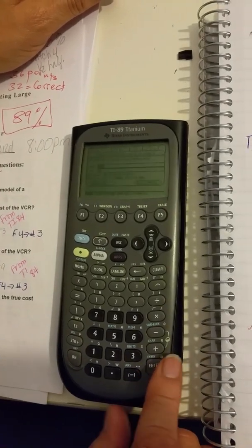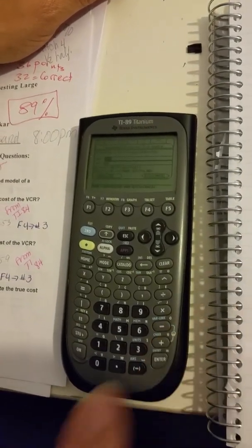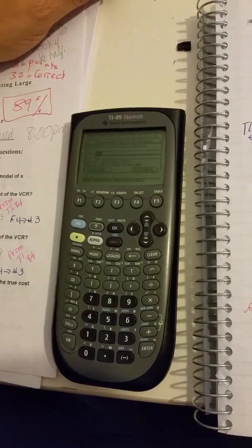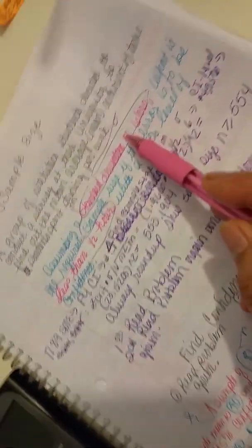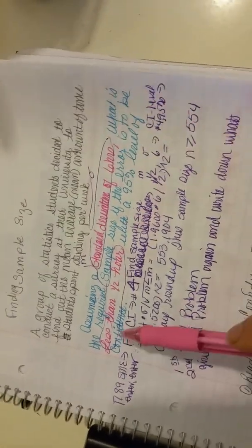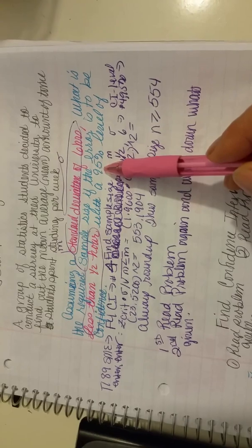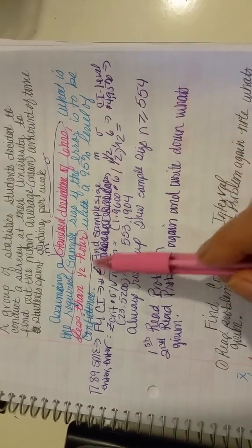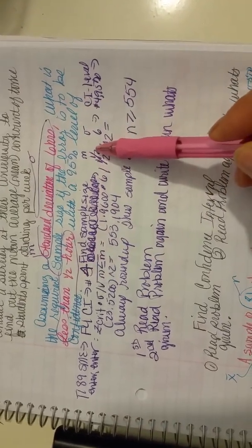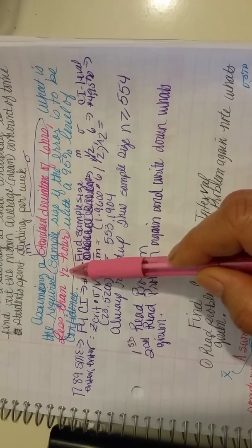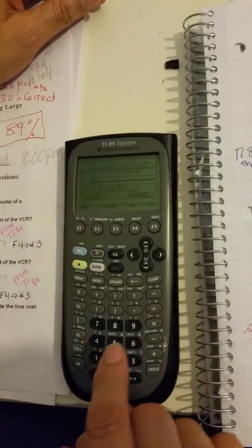Reading it again: assuming a standard deviation of six hours, the error is less than one half hour at 95% confidence interval. So the margin of error is half an hour, we put one half for M, and the standard deviation is six.